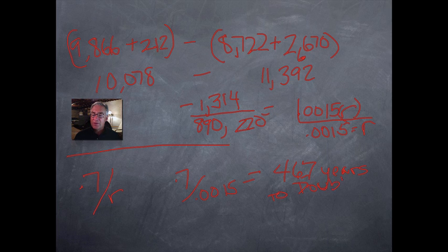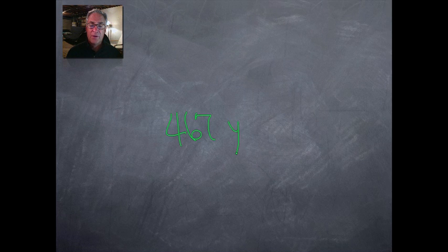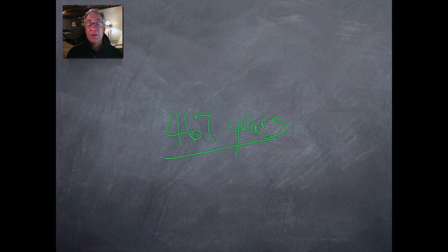Basically, if we keep losing 1,300 or more people every time frame—whether it's a year or ten years—you're not going to double. This is a zero growth pattern. It's going to take 467 years to double, but what that really means is it's just not going to double. We're having essentially zero growth.